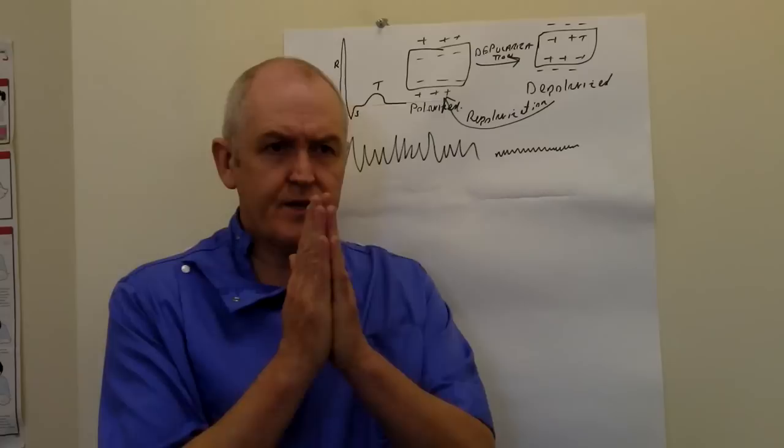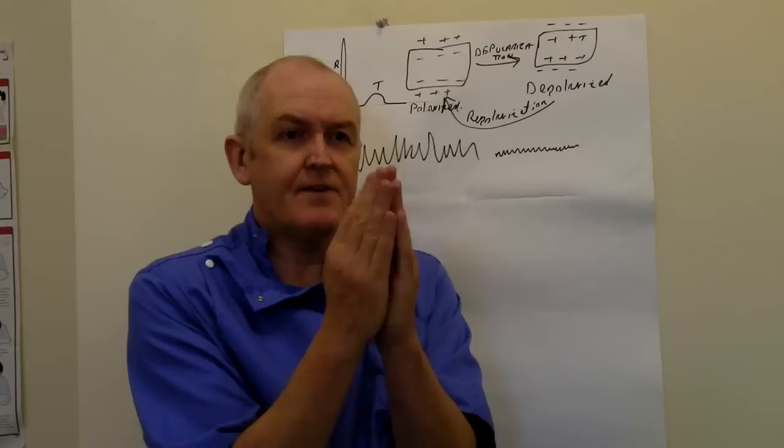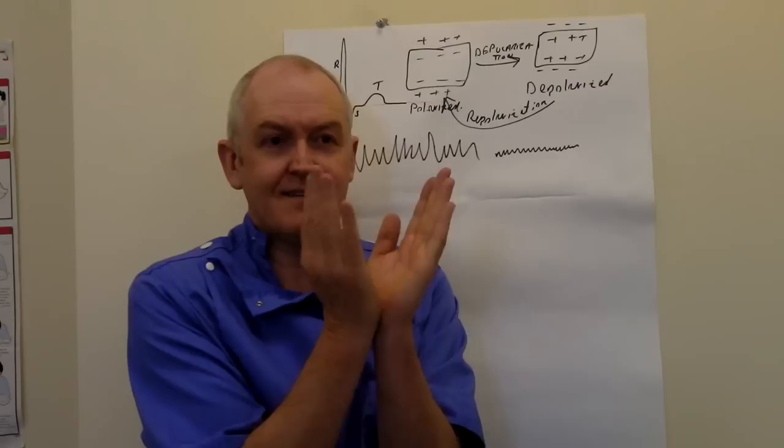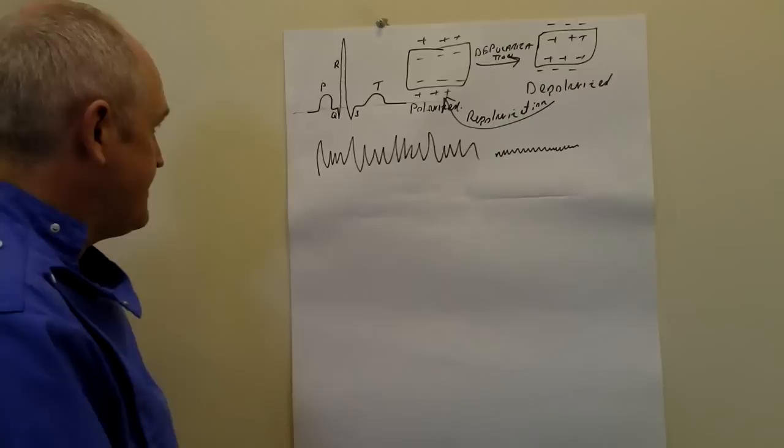To get coordinated contraction with a normal QRS, the ventricles have to contract properly — pumping the blood out. If they're fibrillating they can't do that, which is why it's a cardiac arrest situation. Another situation that can be a cardiac arrest is ventricular tachycardia.